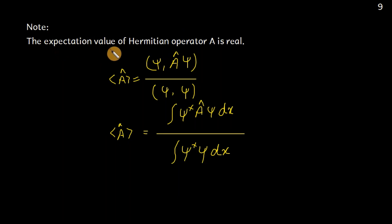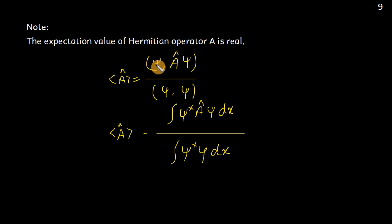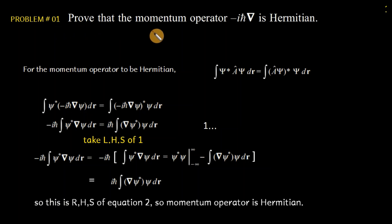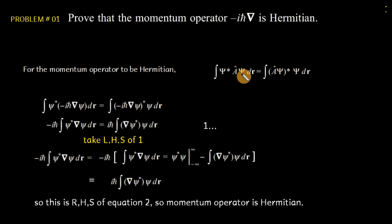One more important point: if an operator is Hermitian, its expectation value will be real. The expectation value is ⟨A⟩ = ⟨psi | A | psi⟩ / ⟨psi | psi⟩. Next problem: prove that the momentum operator −iħ ∂/∂x is a Hermitian operator. For the momentum operator to be Hermitian, it must satisfy the Hermitian operator condition.